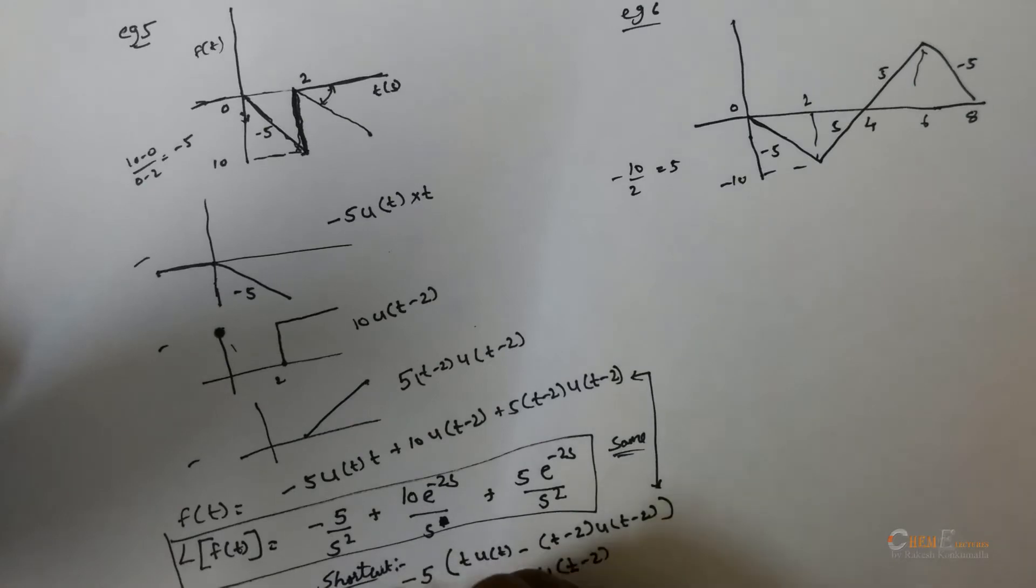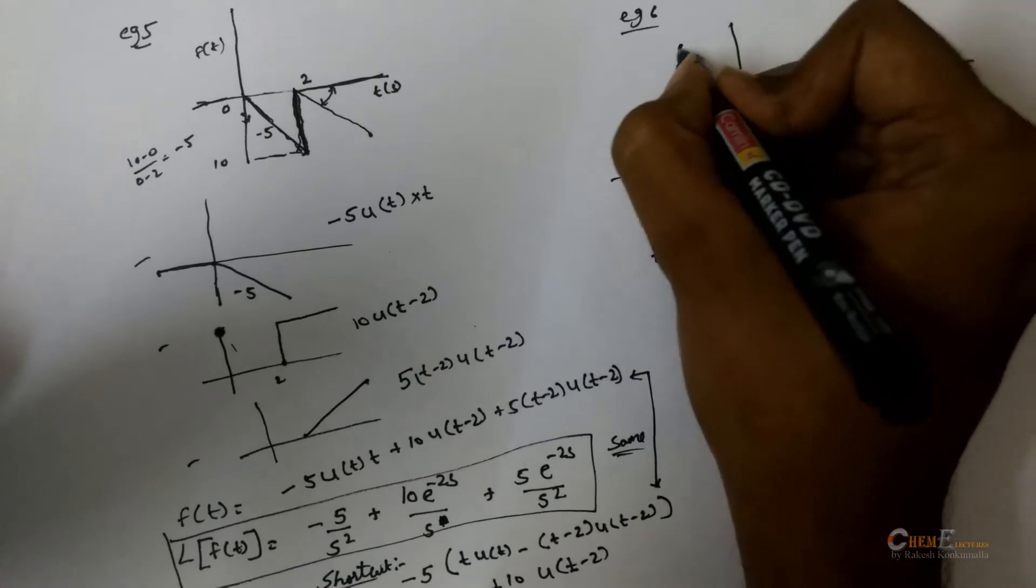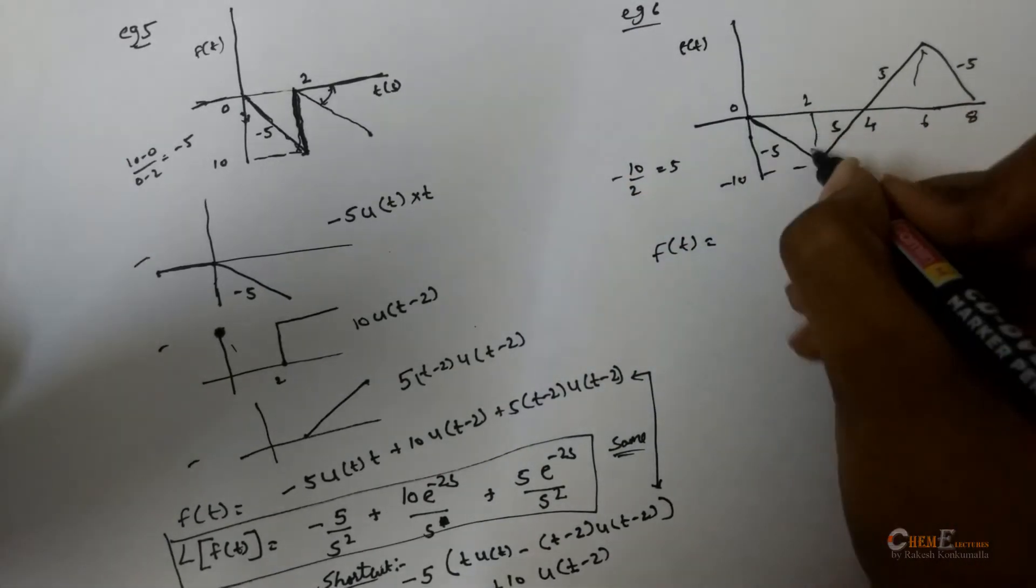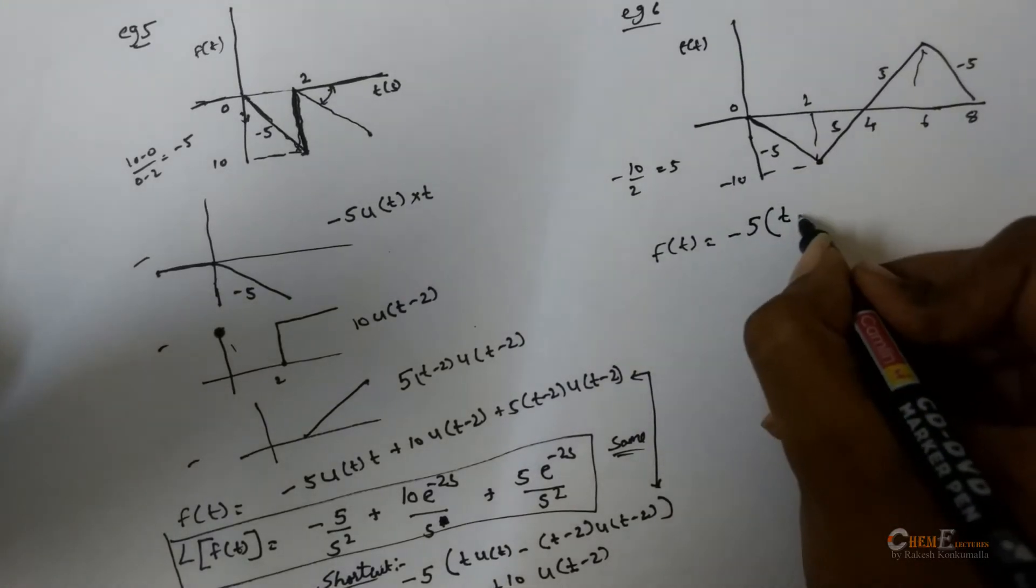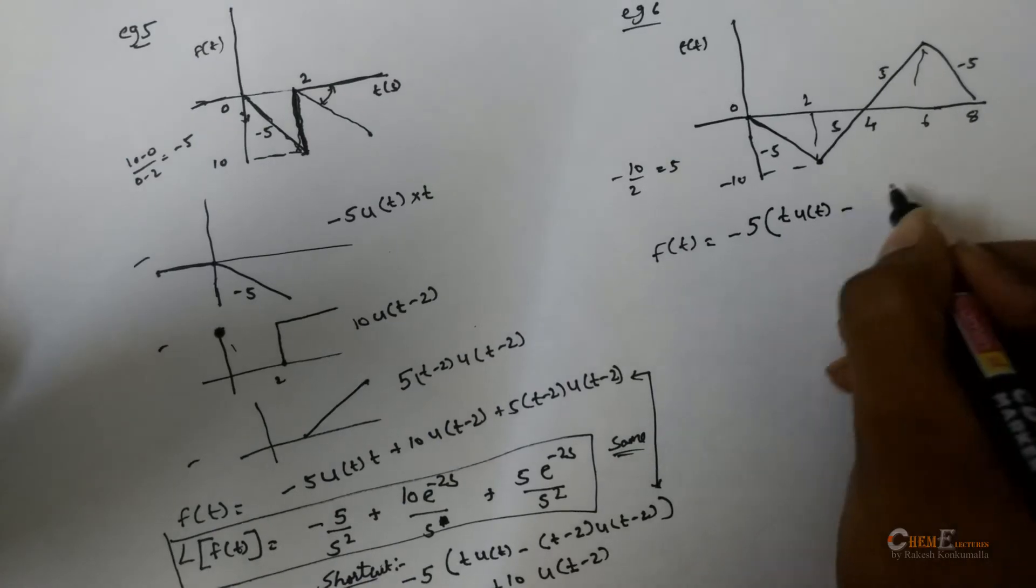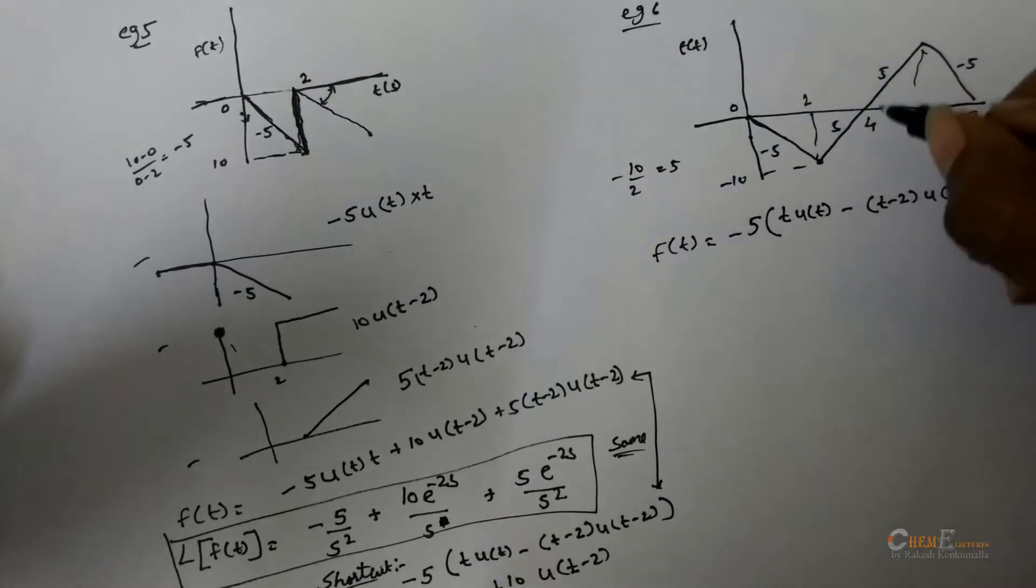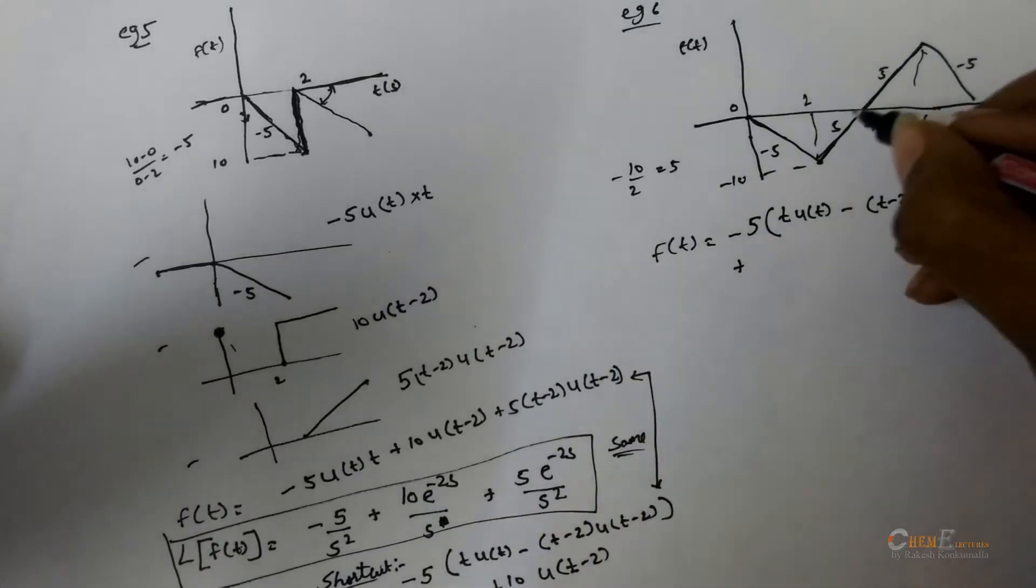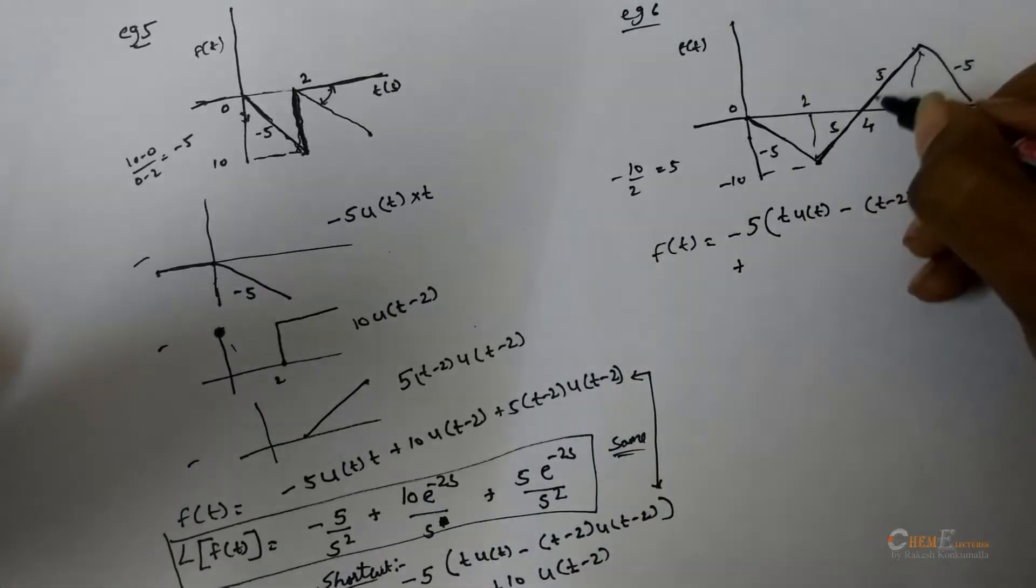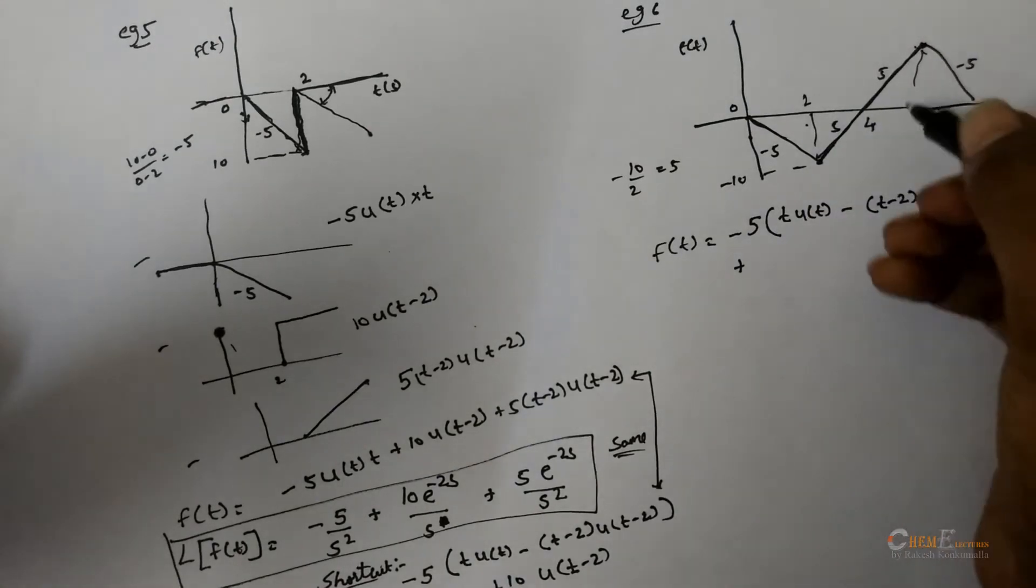Here just apply the method that I have told before. f will be equal to, it is having a ramp with a decrement. Slope minus 5, t u, minus t minus 2, u. Then, again, there is an increment from 2 to 6. Find the slope for this, which will be 20 by 4, that is 5.